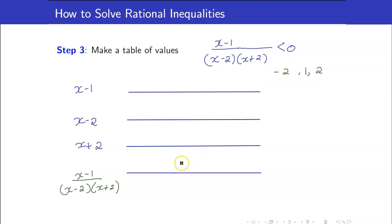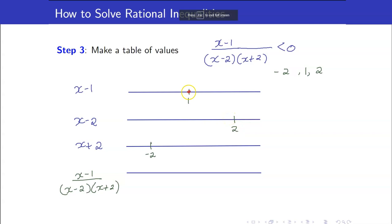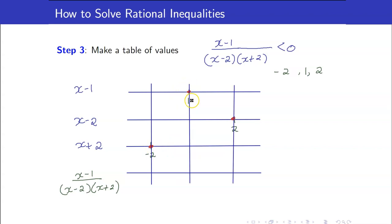I will put negative 2 here for x plus 2, x minus 1 is 0 at x equals 1, and x minus 2 is 0 at x equals 2. I will now divide the number line through these points, just like what we did with quadratic inequalities.